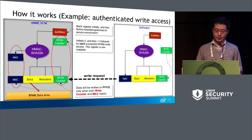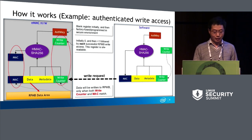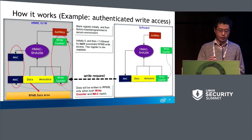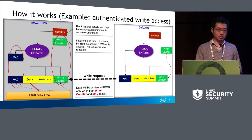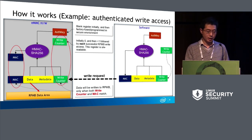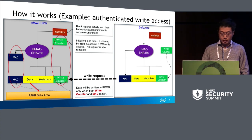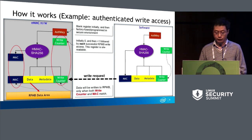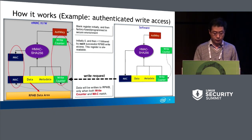After both values match, the data can be written to the partition. But that's not the last step — after data is successfully written, the counter is automatically incremented by one. This means for the next write, you cannot use the previous data to replay. For example, if you record the previous data and send it again, the counter will obviously mismatch. So this is how RPMB works, as defined by the specification for MMC, UFS, and NVMe devices.